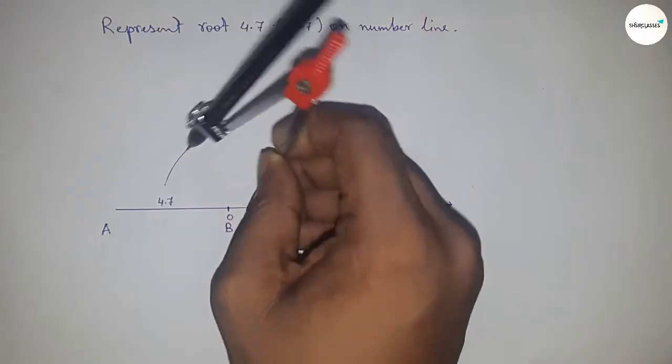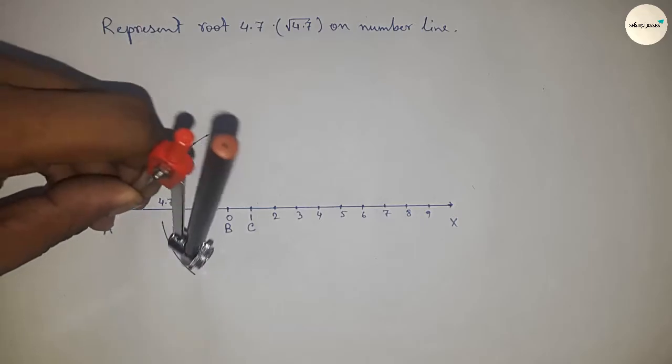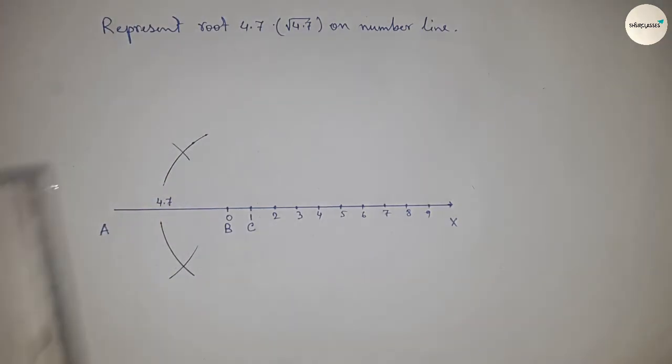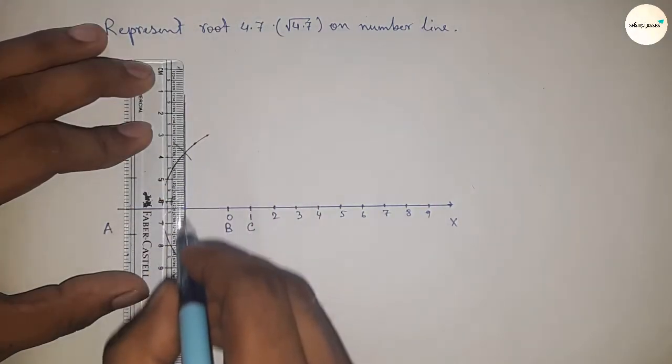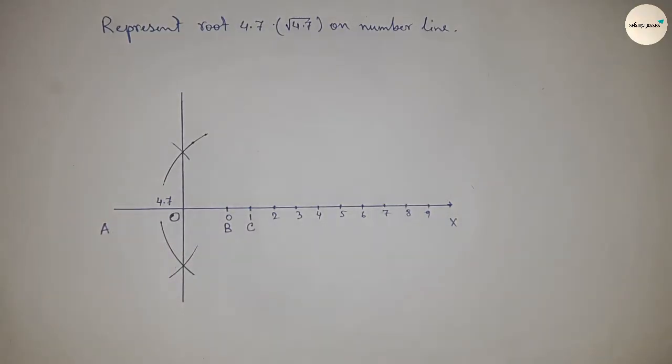Take a distance greater than half of AC and draw arcs with the same length on both sides. Join the intersections which meet at point O. Then, taking distance OA and OC, draw a semicircle through points A and C.